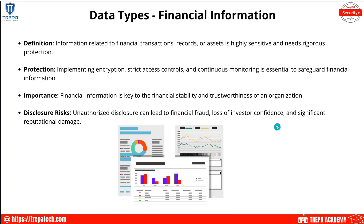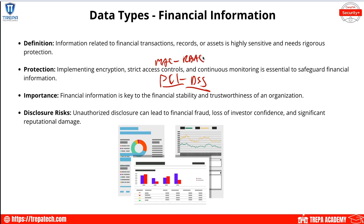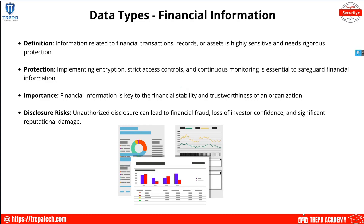For financial information, we need to comply with PCI DSS, especially for credit card and debit card transactions within the Visa, Amex, and Mastercard networks. Protection involves encryption, strict access control with MAC and RBAC schemes, and monitoring — such as deploying DAM (database activity monitoring) or FIM (file integrity monitoring) to alert on unauthorized access to financial files.